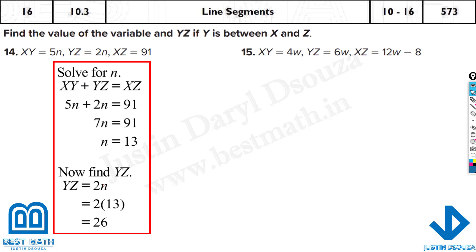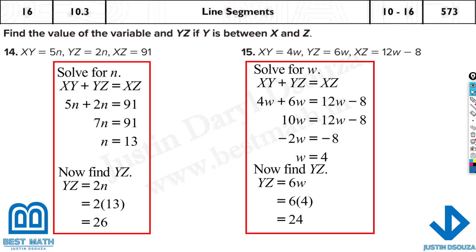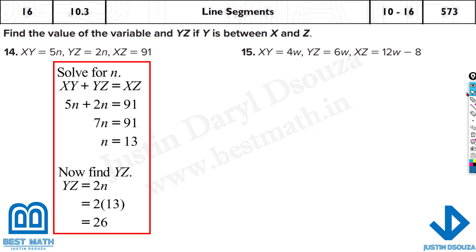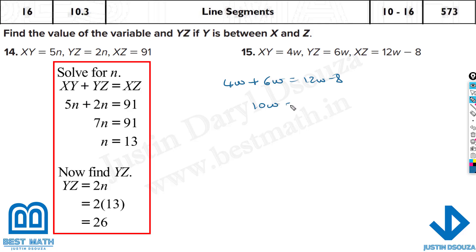For the next problem, the left side gives us 10 and the right side we'll solve directly. Substituting: 4w plus 6w equals 12w minus 8, so 10w equals 12w minus 8.